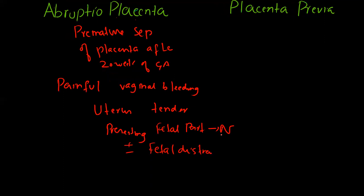Coming to placenta previa: it is defined as abnormal location of the placenta near, partially, or completely over the internal cervical os.